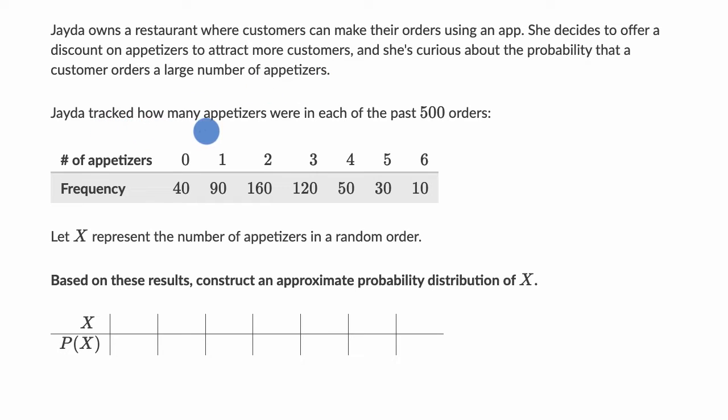Jada tracked how many appetizers were in each of the past 500 orders. All right, so the number of appetizers: 40 out of the 500 ordered zero appetizers, and for example, 120 out of the 500 ordered three appetizers, and so on and so forth.